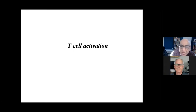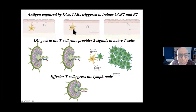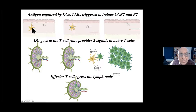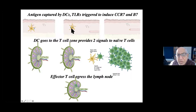Now T cell activation. Starting with the dendritic cell: it ingests a protein antigen from a microbe, which gets presented on MHC class II. The TLR gets activated on the cell, and one result is induction of chemokine receptor CCR7. This dendritic cell is then pulled into the nearest lymphatic because there's a gradient of cytokines CCL19 and CCL21 for CCR7. The DC migrates all the way to the nearest lymph node, and it also upregulates B7 expression.